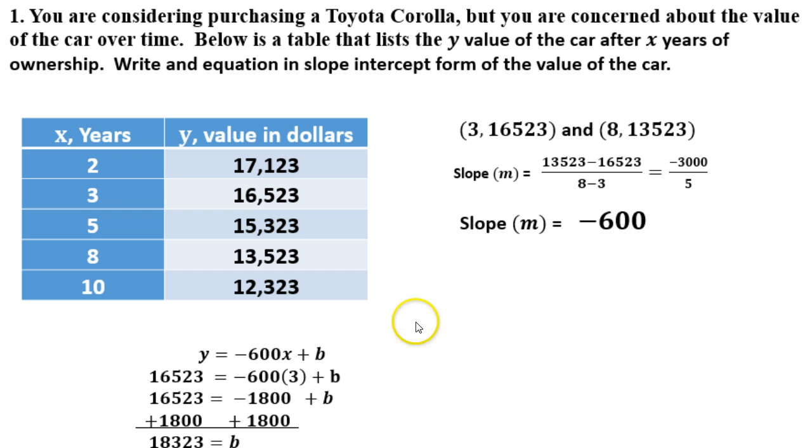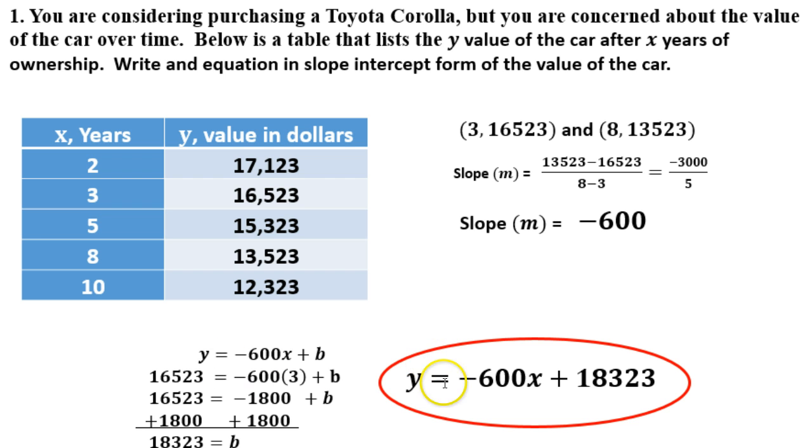This is my y equals mx plus b, but I know what my m is and what my b is. So y equals negative 600x—that's my m value—plus 18,323, which is my b value. This is our equation, and we can go through each one of these and plug them in. All of these should work, which would indicate that we have the correct equation.